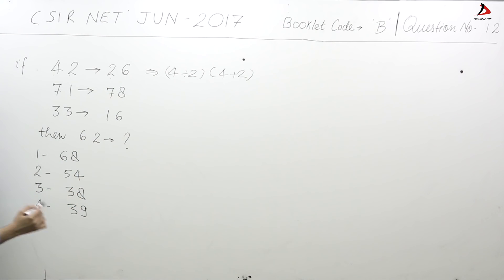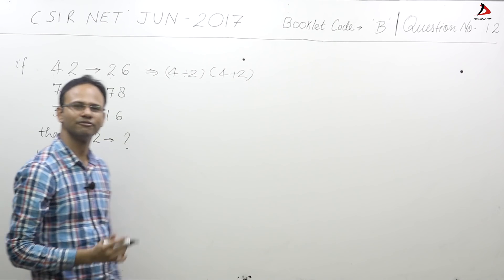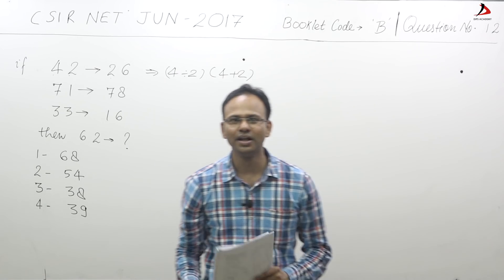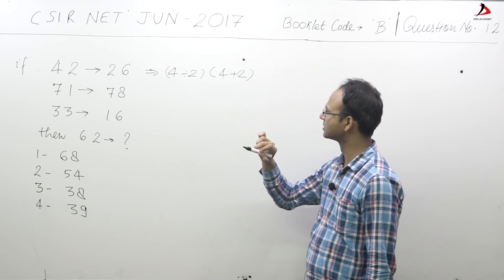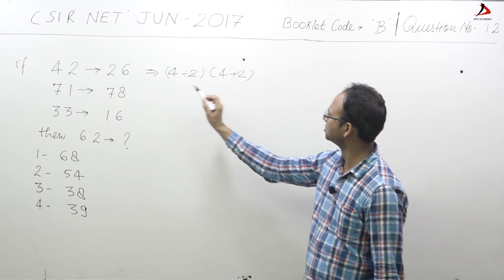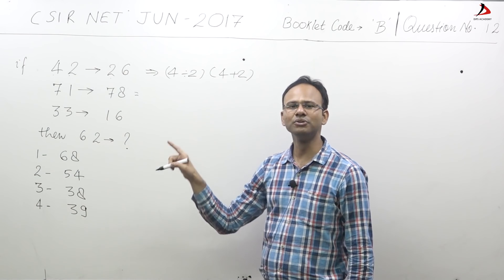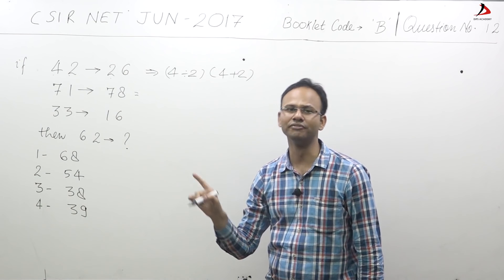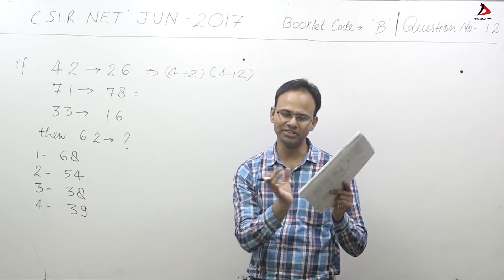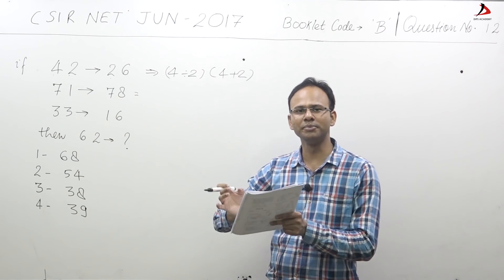So that is 2 and 6. Similarly, 7 divided by 1 will give you 7, 7 plus 1 will give you 8. So the first digit is the division of the two, and the second digit will be the summation of the two.